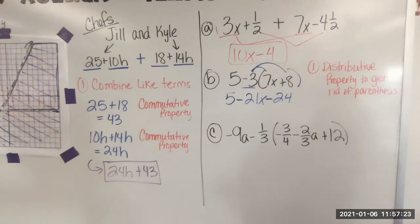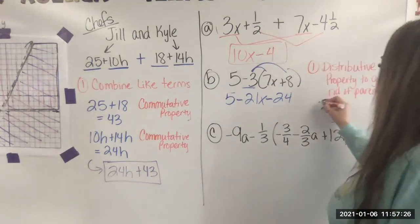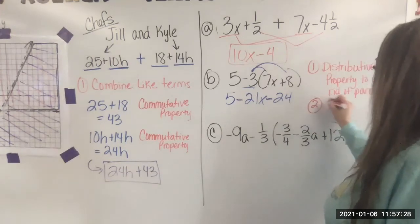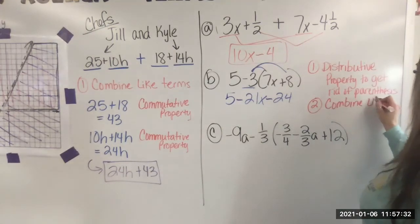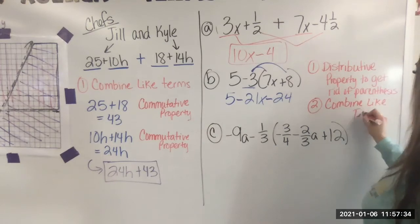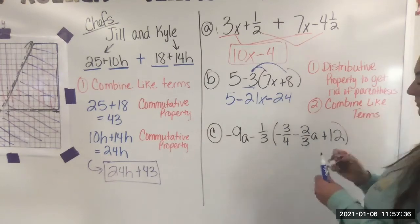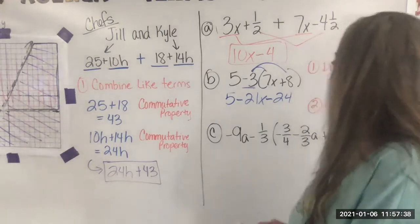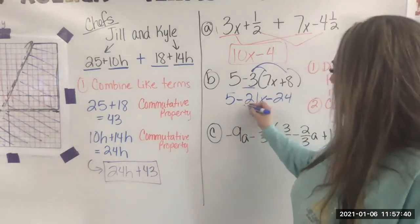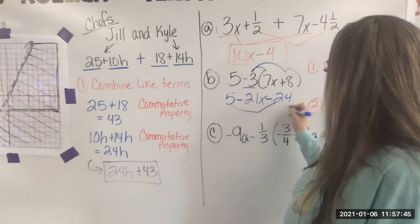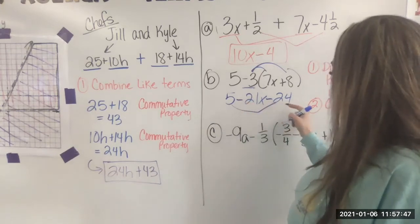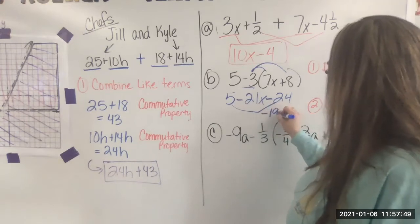Now I'm looking to see if I can combine like terms. That's step two. Combine like terms. Here's five. This term has an X. This one doesn't, so I can put these together. 5 minus 24 is negative 19.